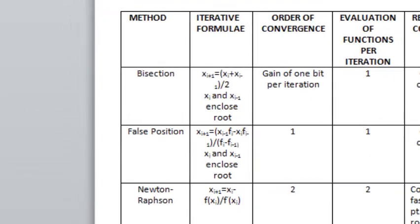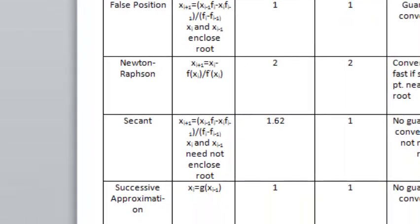First is bisection, second is false position, third is Newton-Raphson, fourth is secant, fifth is successive approximation.